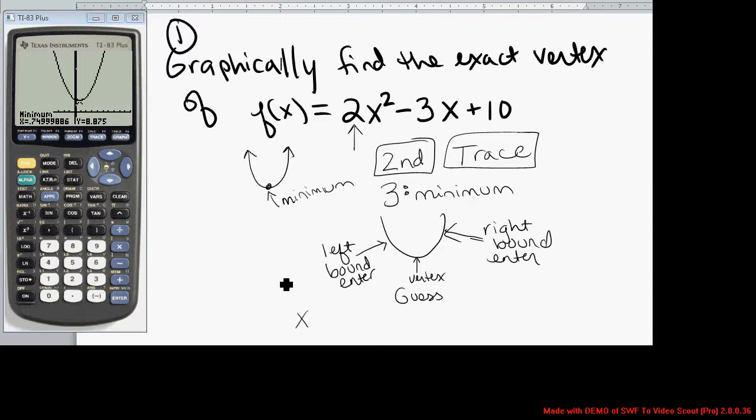And now in my calculator, it gives the value x is 0.7499999 and y is 8.875. Now in reality, the vertex of this is x = 0.75, y = 8.875. It is the point (0.75, 8.875).